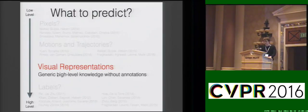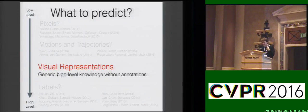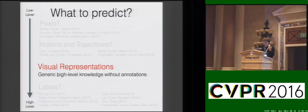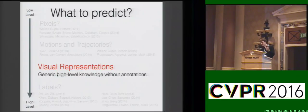What we propose is to predict the visual representation of frames in the future. Visual representations have the advantage that they encode high-level information about the image, and they're also automatic to compute. Several works have empirically shown that these representations excel in many diverse tasks like object detection or action recognition. They're a good target to predict, because if you can predict a representation, you can apply a recognition algorithm on top to forecast whatever you wish.